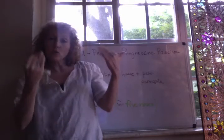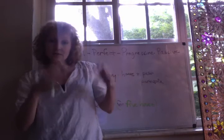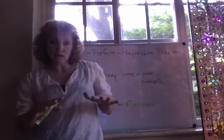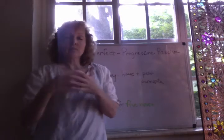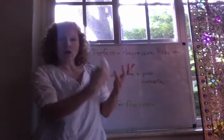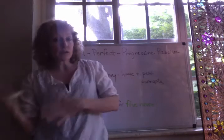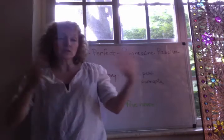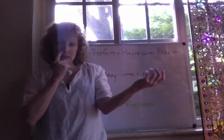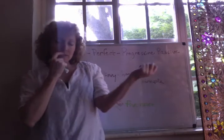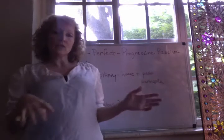The whole verb phrase is comprised of just the verb 'cried' because we don't have any complements following the verb. There's no direct object, there's no indirect object, because we have an intransitive verb.